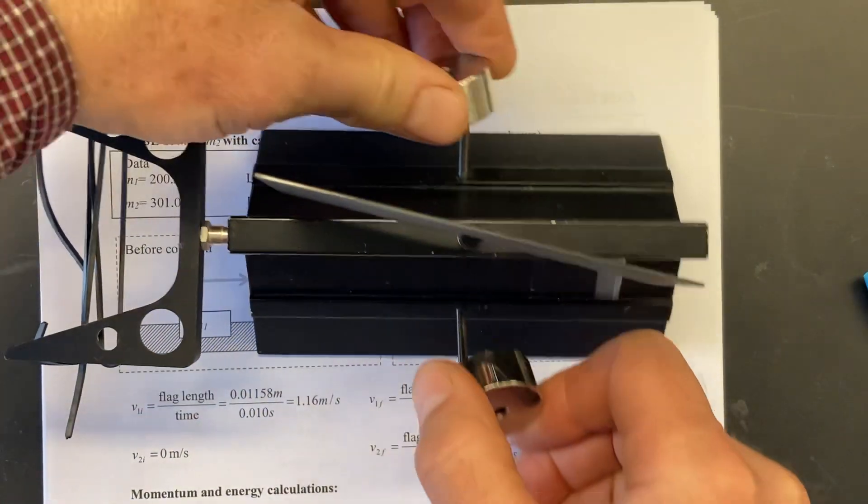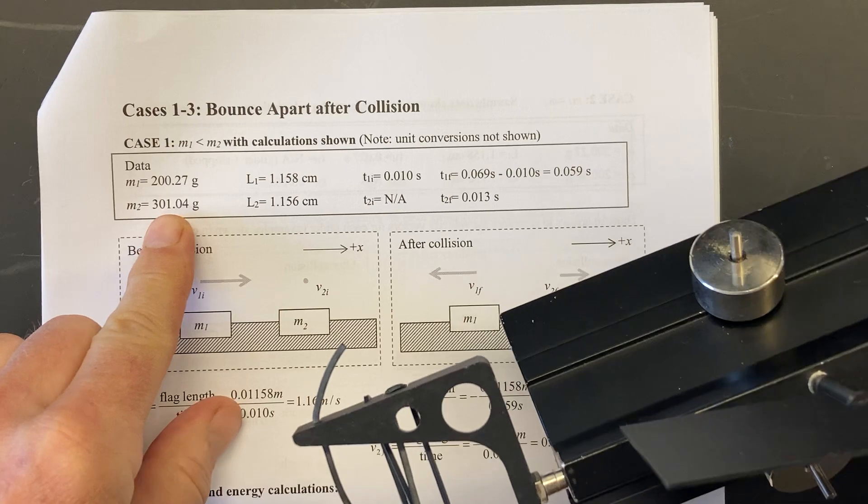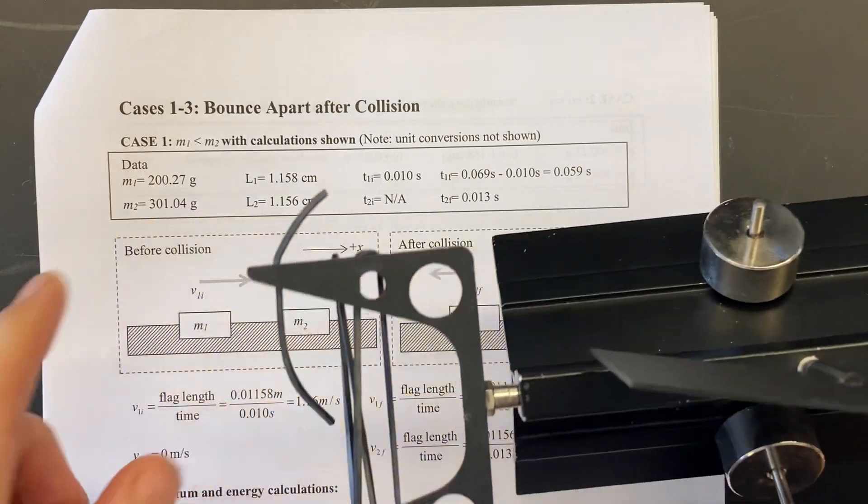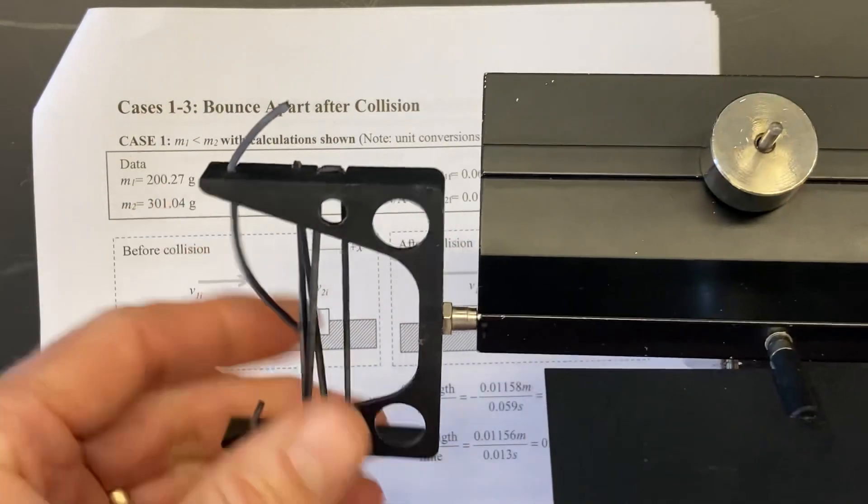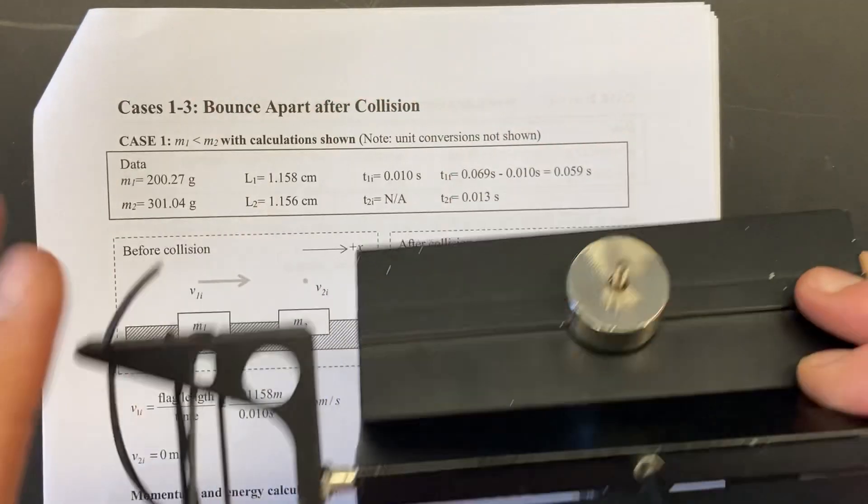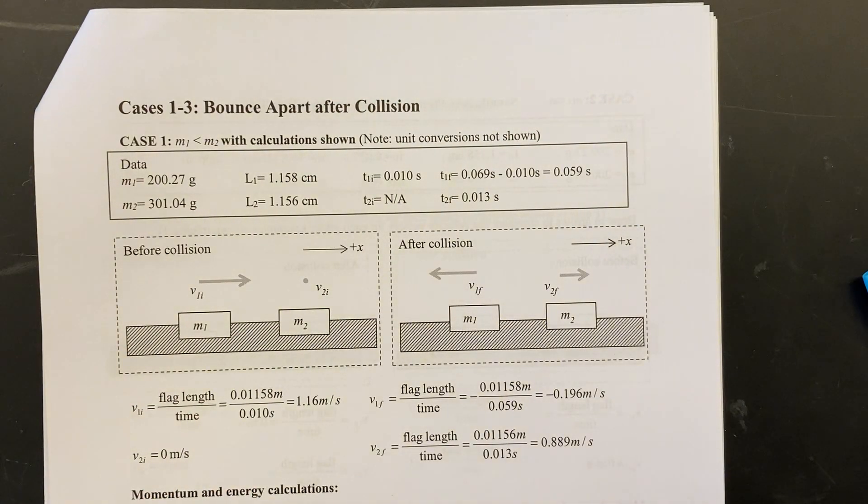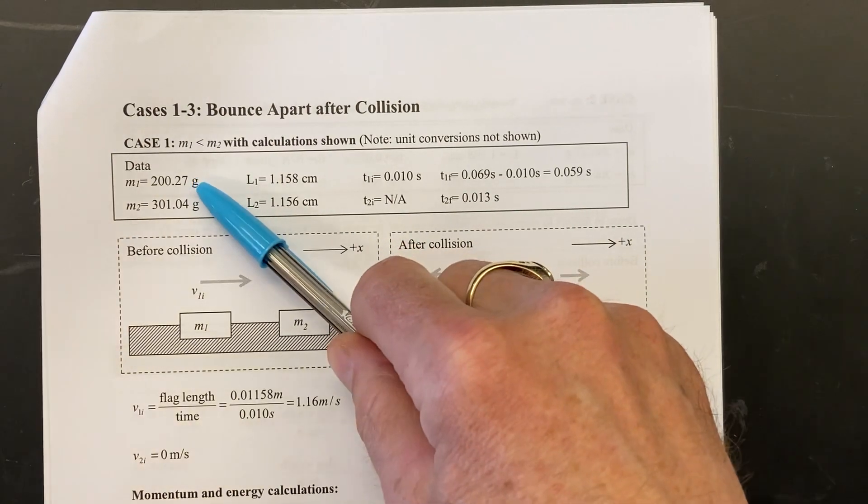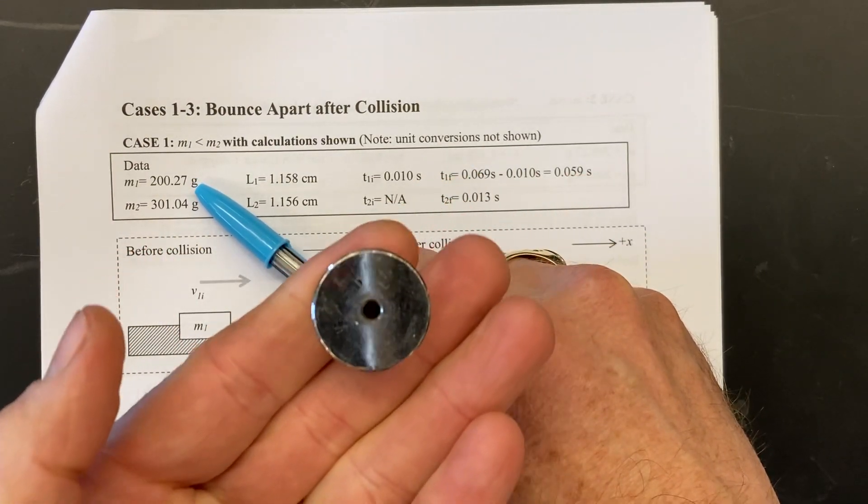The way that worked is I put a couple of masses onto one of the gliders. But this mass of 301.04 grams, that's with everything. That includes this flag, this bumper, these masses. So we weigh it just as it was used in the experiment, and then the same thing for the other one, and the reason that's different is because it didn't have these.